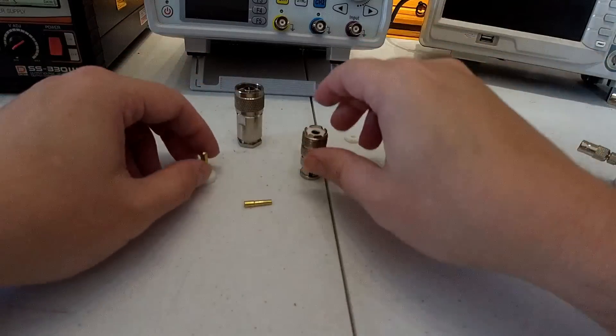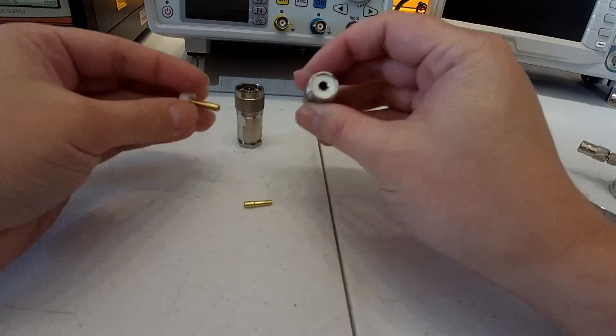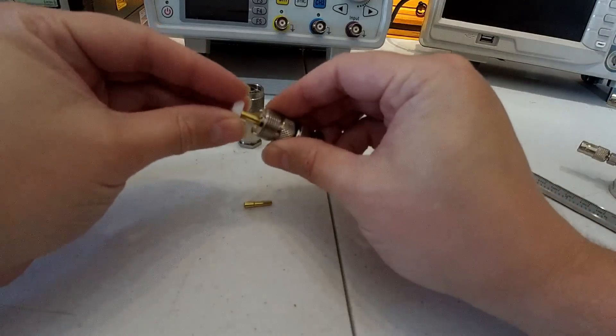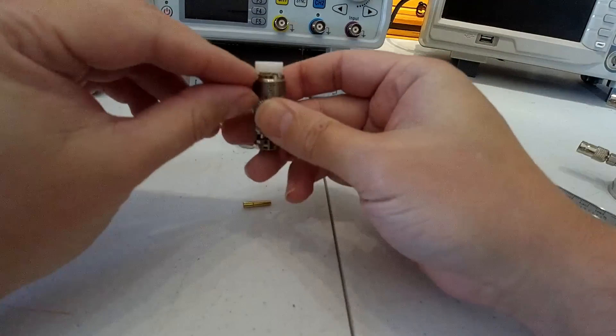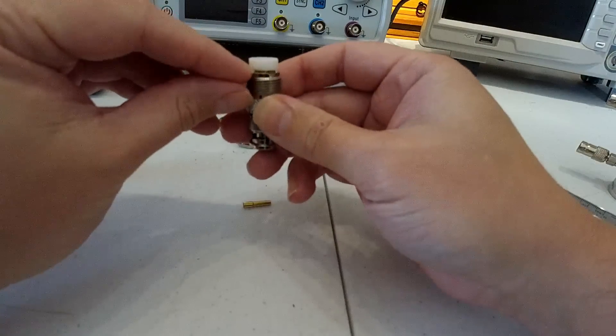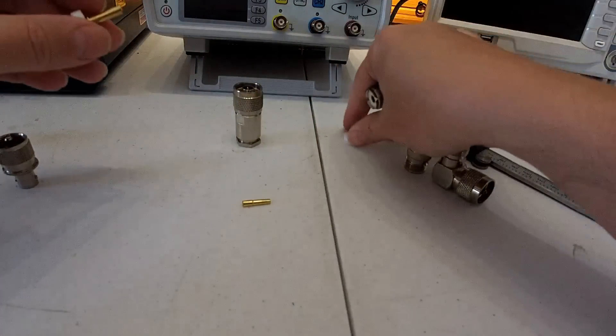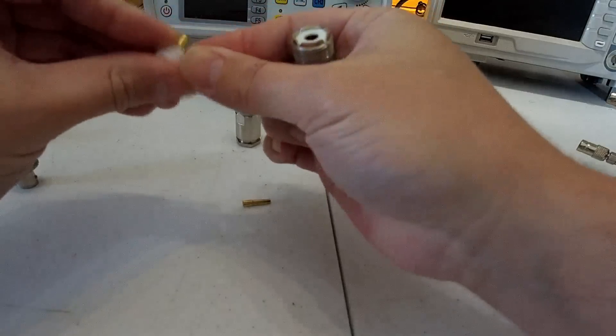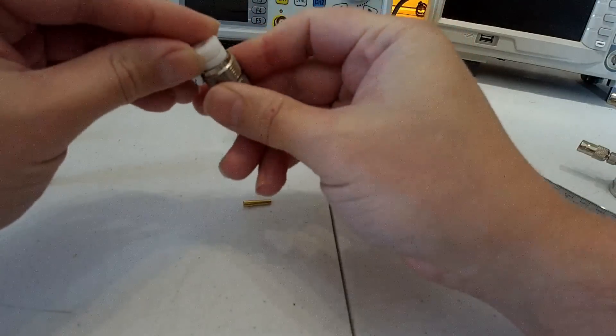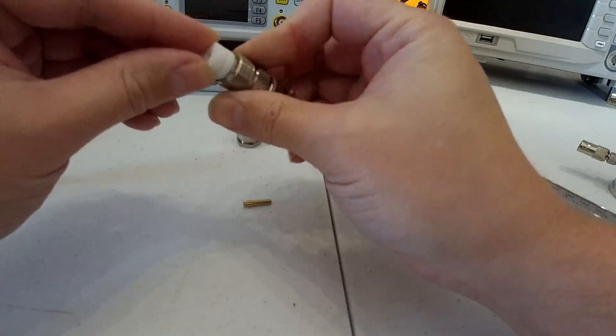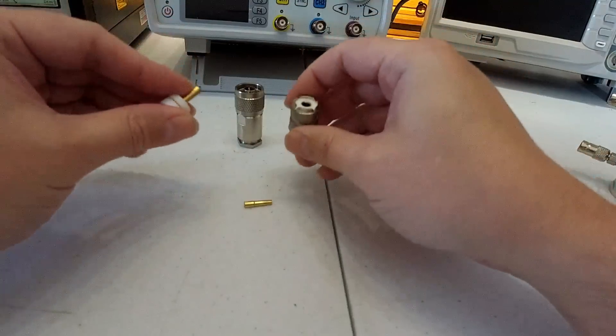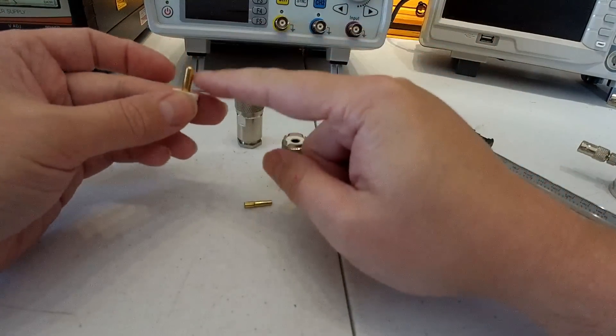Basically you've got 33% more current handling as a minimum. It is 33% larger in terms of circumference or diameter than the N connector. So there you go, the PL259 and SO239, when inserted, you do have a bit of an air gap there. You've got higher current handling and higher breakdown voltage.